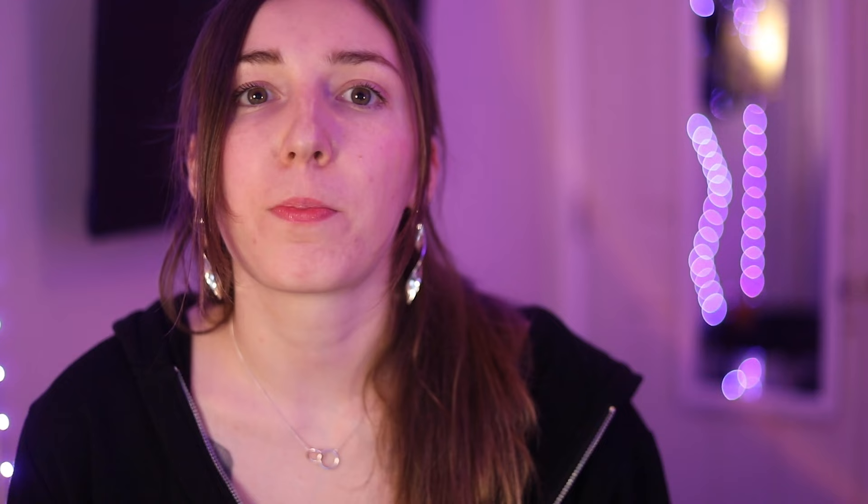Integrated Information Theory was proposed by neuroscientist Giulio Tononi. It is one of the leading theories of consciousness. It asks a pretty bold question: can we capture the experience of self through a mathematical model? Pretty ambitious.